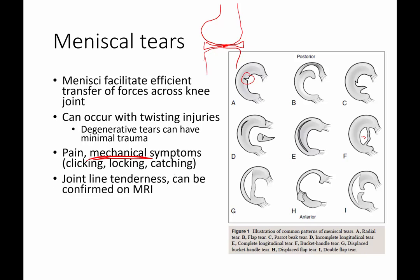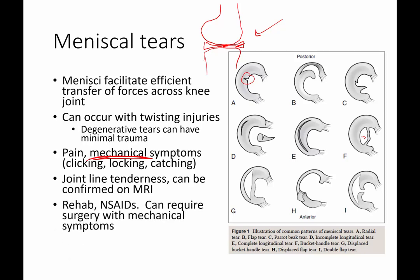On physical exam, you can have joint line tenderness, and you may also have a positive McMurray test, although it's not the most sensitive test. MRI is very helpful to confirm a meniscal tear. Treatment includes rehabilitation and NSAIDs. In younger patients, surgical repair may be required, particularly if there are mechanical symptoms like catching or locking. In older patients with degenerative tears, it's very questionable whether surgery is helpful.